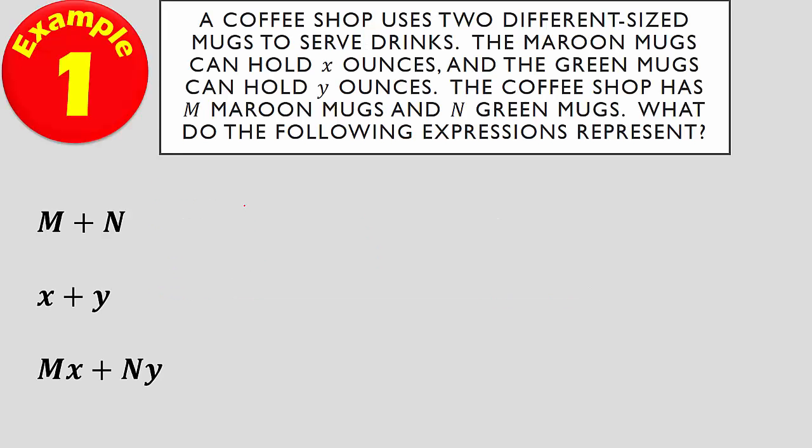Let's take a look at our first example. A coffee shop uses two different sized mugs to serve drinks. Maroon mugs can hold X ounces and the green mugs can hold Y ounces. The coffee shop has M maroon mugs and N green mugs. What do the following expressions represent?